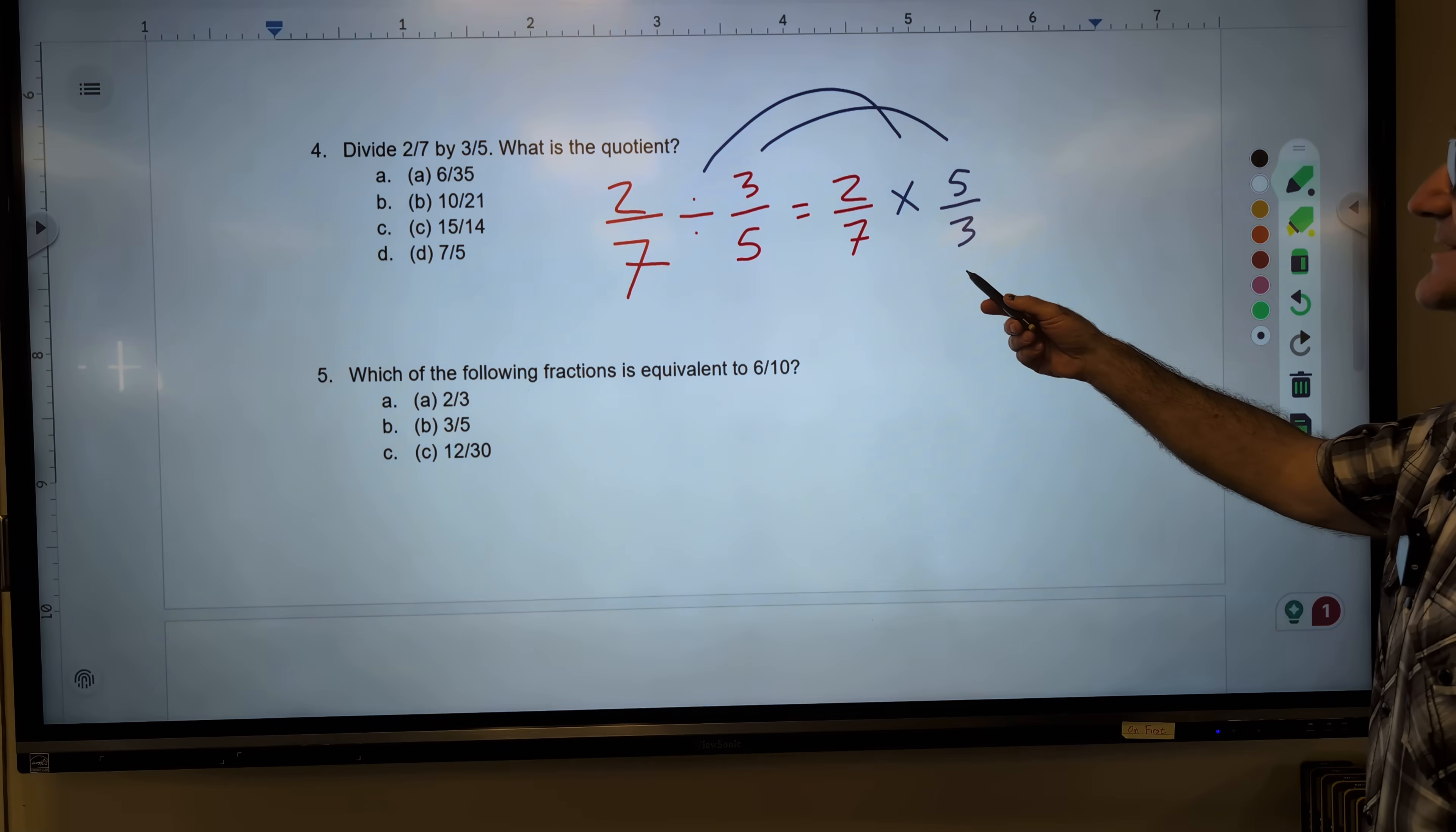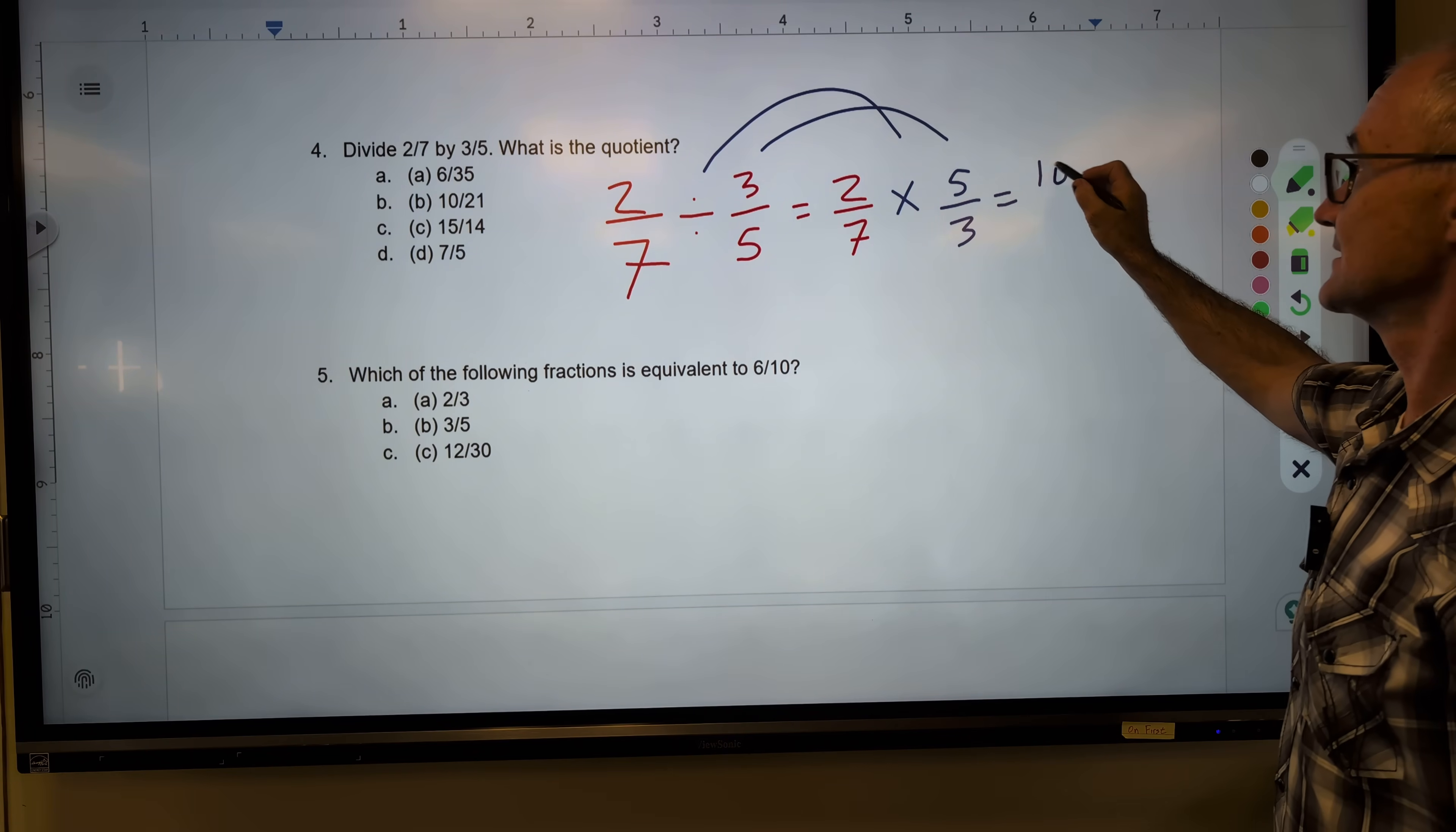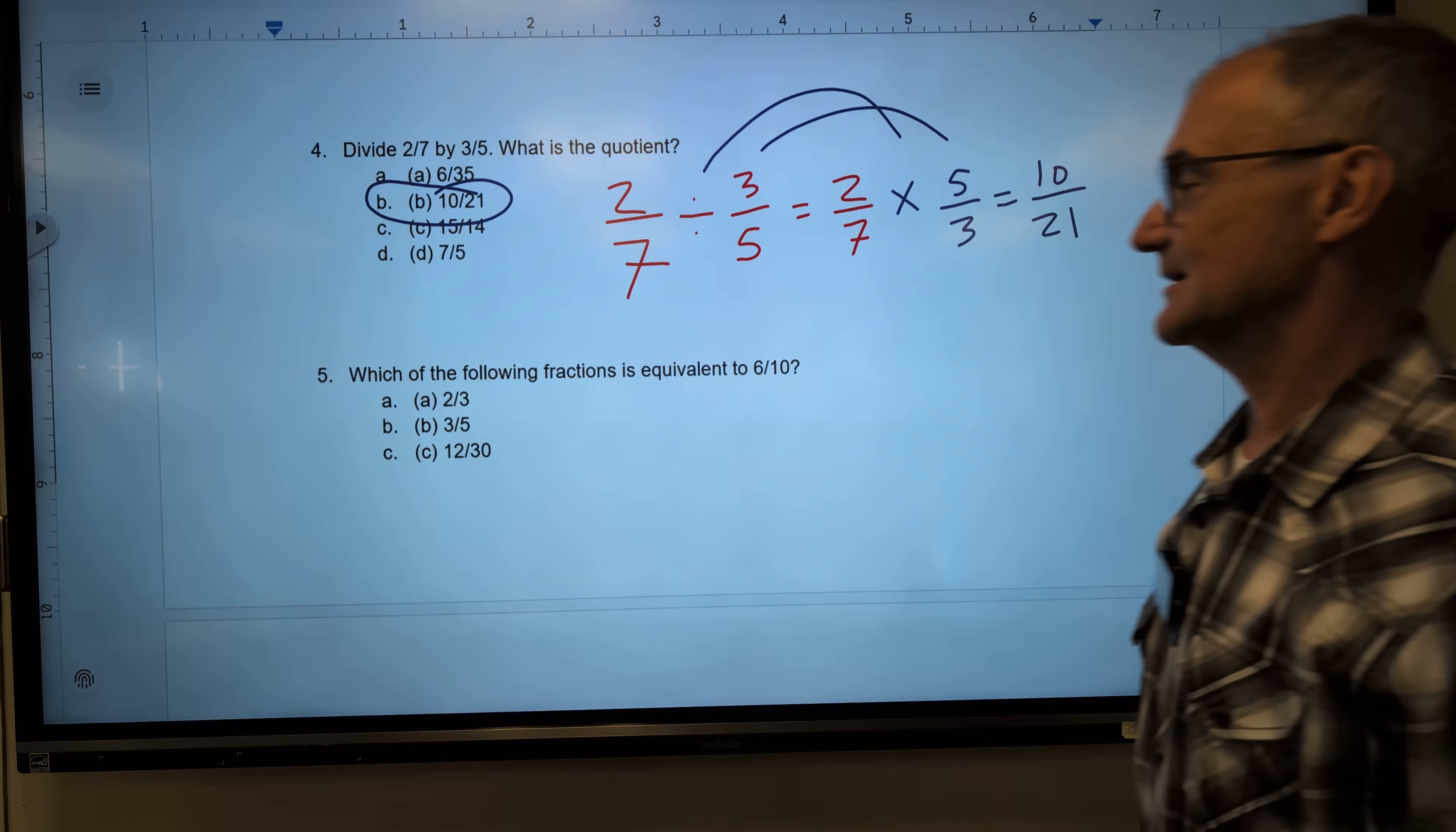Again, I'm going to look up here and see if there's anything to cancel. Anything that'll go into two, no, five. There's nothing that'll reduce or cancel. Then I just multiply across the top, 10, multiply across the bottom, 21. I'll double-check one more time to see if I can reduce. There is no number that goes into both of those. Therefore, the correct answer is answer B right there.